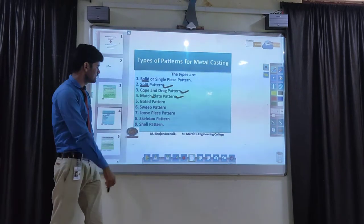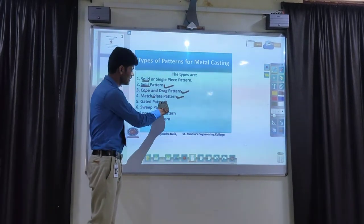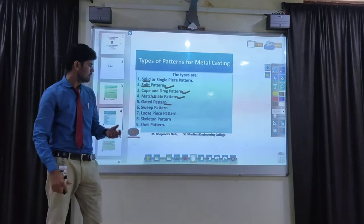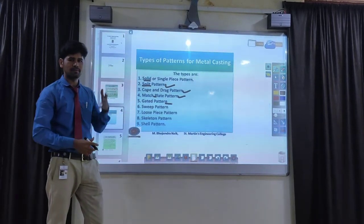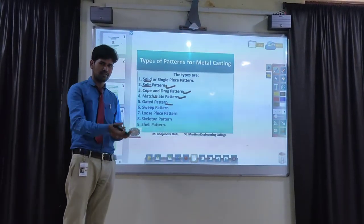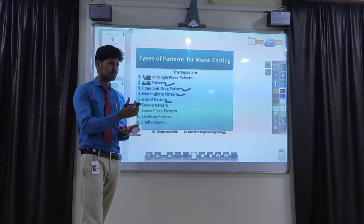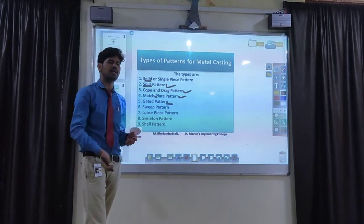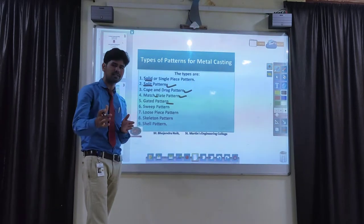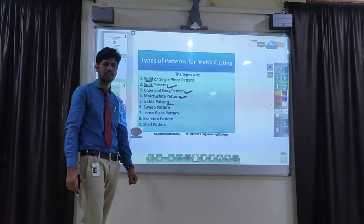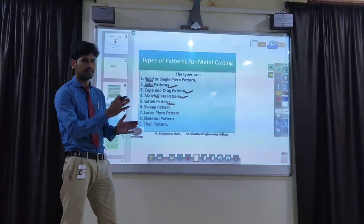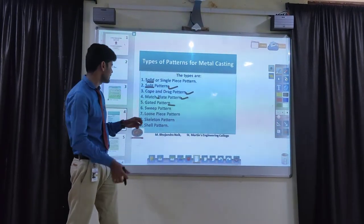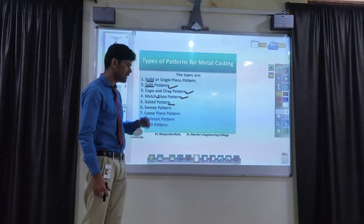The next type is called a gated pattern. When molten metal flows from the sprue basin to the mold cavity, small objects should be attached either to the runner or the riser. That object should be kept on the side of the runner or riser. That pattern is called a gated pattern.